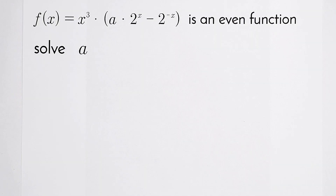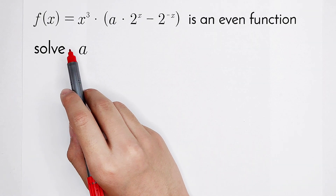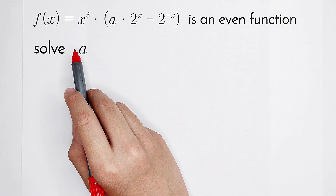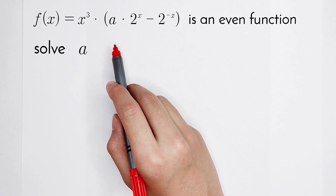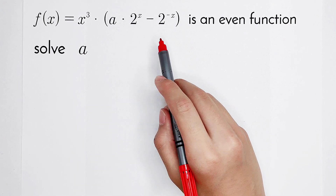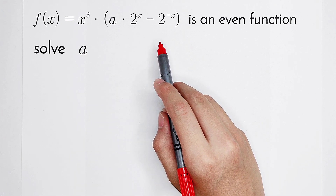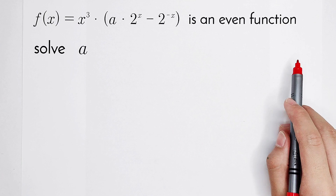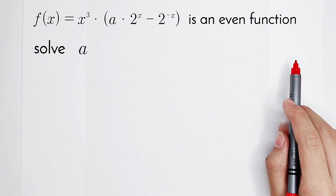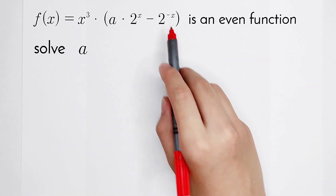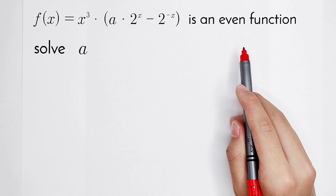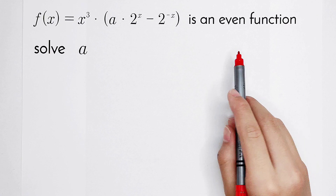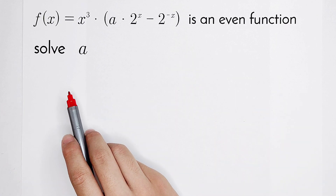Welcome to Math Window. We're given that f of x is equal to x cubed, times bracket of a times 2 to the power x, then minus 2 to the power minus x. It's an even function. So f of x is equal to this expression, and it's an even function — find the value of a.